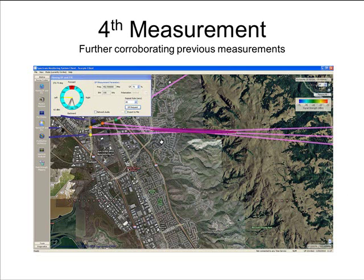This is the fourth measurement. It can now be seen that the second through fourth measurements are coinciding with each other. On the map it can be seen that the vehicle has taken a left turn, and in the control box the target emitter is now originating from the left of the vehicle. The first measurement could be considered bad, but that is what will happen in the real world — in this case it was performed with a freeway bridge between the vehicle and the target emitter. Had we known where the target emitter was, we could have forced the system to only take data when there was a clear view of the transmitting antenna, but that would have defeated the purpose of showing a realistic example.